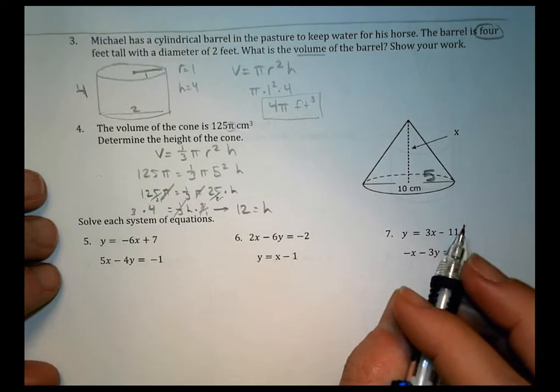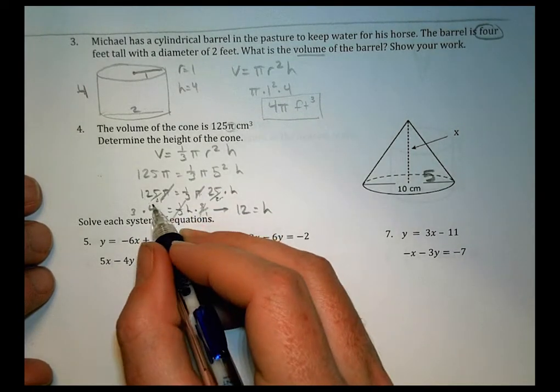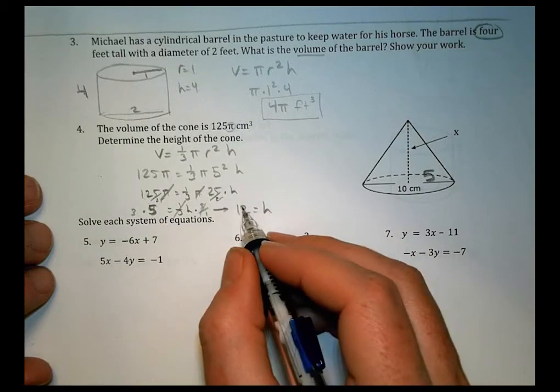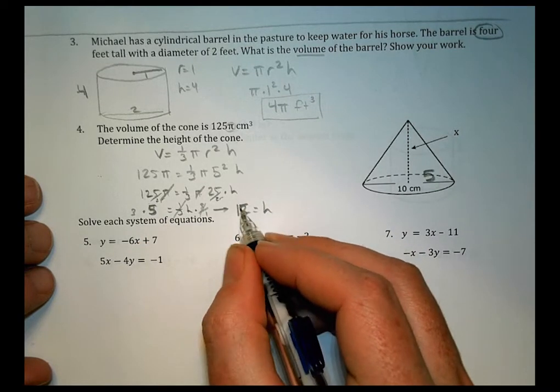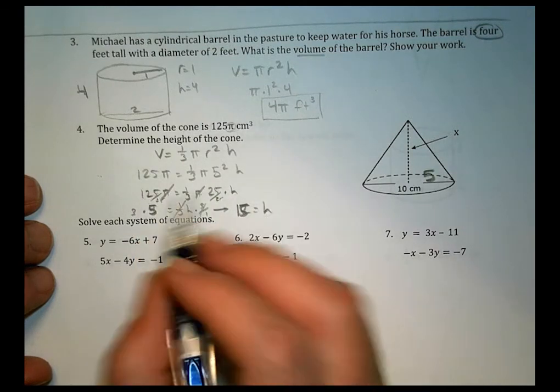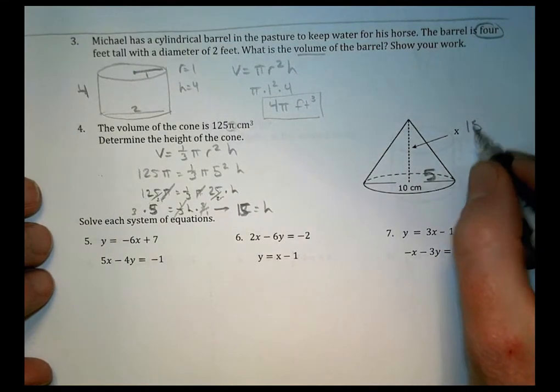That's what I end up getting for the height. Oops, sorry, I got in a hurry there. 125 divided by 25 is actually 5. So sorry, we actually have 15. Sorry about that. Don't get in a hurry too much. 125 divided by 25 is 5, and then 3 times 5 is 15. So we would say 15.